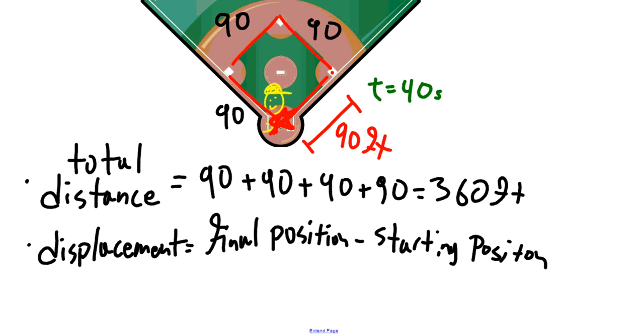So for our problem that we did, our displacement would be a displacement of zero meters, because the person started and finished in exactly the same spot. And so you can see, distance and displacement, although they sound like you've used them interchangeably, can end up being very different numbers and have totally different meanings.